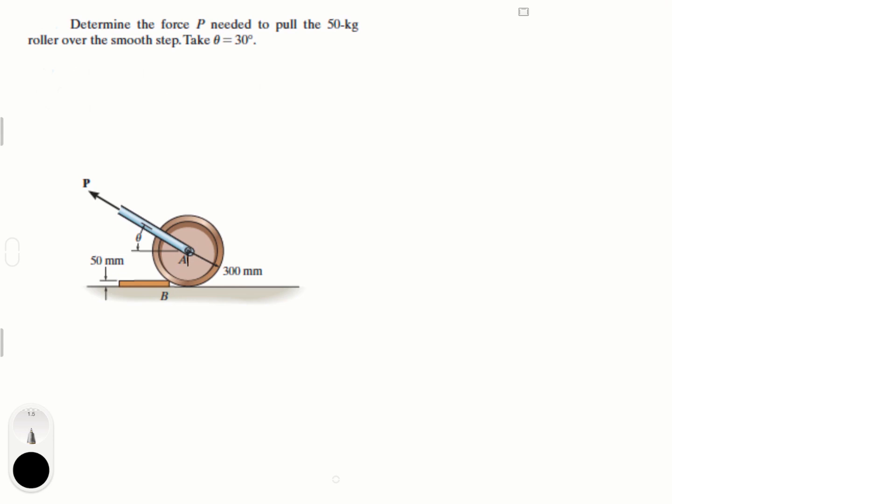First we have the weight of the roller going down right at the center. You know that the weight is equal to the mass times the acceleration of gravity. The mass is given as 50 kg and the acceleration of gravity is 9.81. Now, we have a reaction F of B. We can see we have a reaction right here. Let's call it the normal. And we have B and we have the angle theta. That's pretty much it.